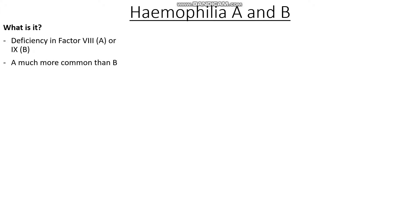Factor VIII deficiency, or haemophilia A, is significantly more common than haemophilia B. The chromosomes which code for the factor VIII and factor IX genes are the X chromosomes, so these conditions are X-linked recessive conditions. Even though most cases of haemophilia A and B are inherited, up to 30% of cases may be a sporadic mutation and therefore have no link to the parent whatsoever.